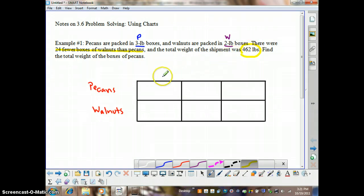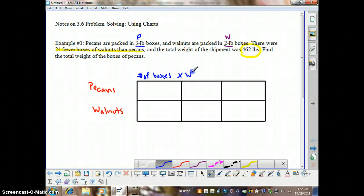Well, we know that we have a certain number of boxes and each box has a certain weight. So if we take the number of boxes times the weight per box—this little line means per, per box—we have the total weight.